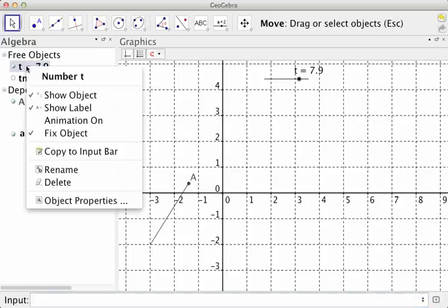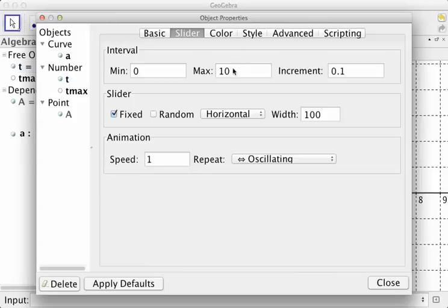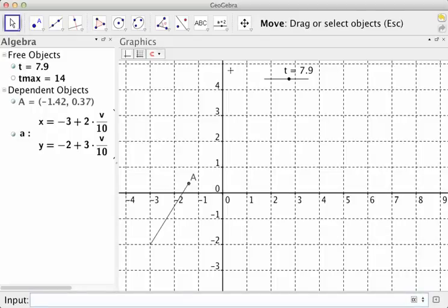If I right click on the slider and go to properties, now I can change the maximum to be tmax. Press enter, close this. Now if I grab this and slide it, it can go all the way to 14.